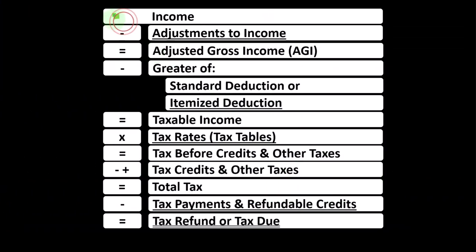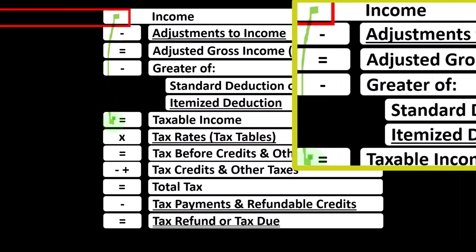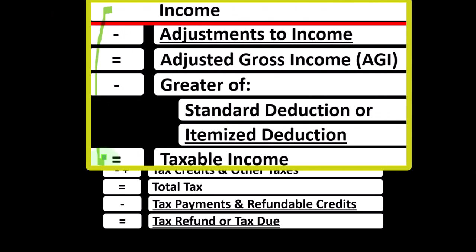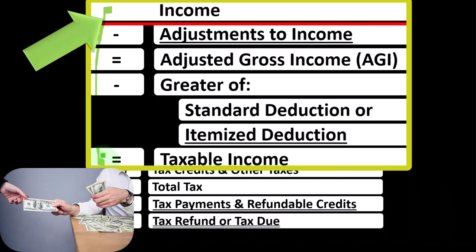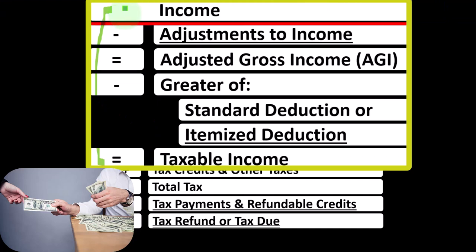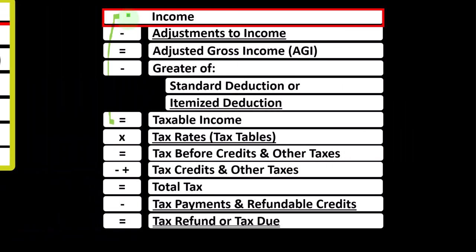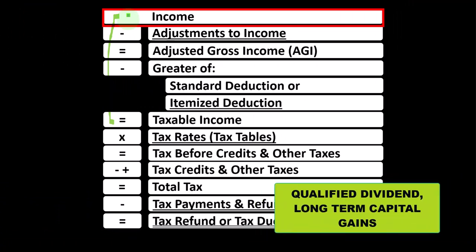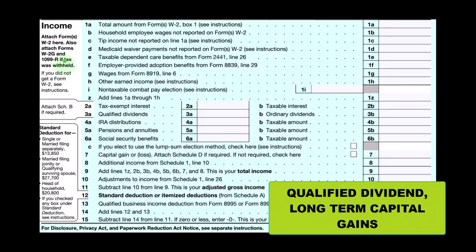Looking at the income tax formula, we're focused on line one: income. The first half of the income tax formula is basically a funny income statement where normally you have income minus expenses resulting in net income. Here we have income minus various deductions resulting in taxable income. With the income line we want it as low as possible for taxes, therefore looking for things we can exclude from income. Also noting that some types of income might have more favorable tax rates, such as qualified dividends and long-term capital gains.